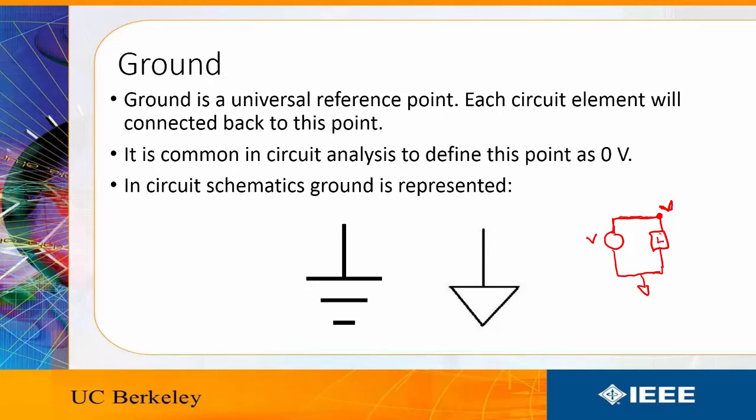So to calculate the voltage across this load, all we have to do is find the difference between this point and this point, but we already say this is ground, which is zero. So the voltage across the load is V minus zero equals V.